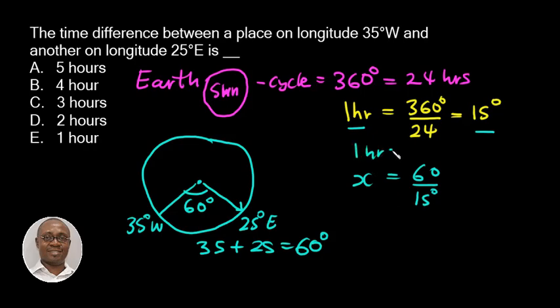This is what I did. One hour is equal to 15 degrees. So by the time you cross multiply, you have 60 over 15. And this will give us 4 hours.